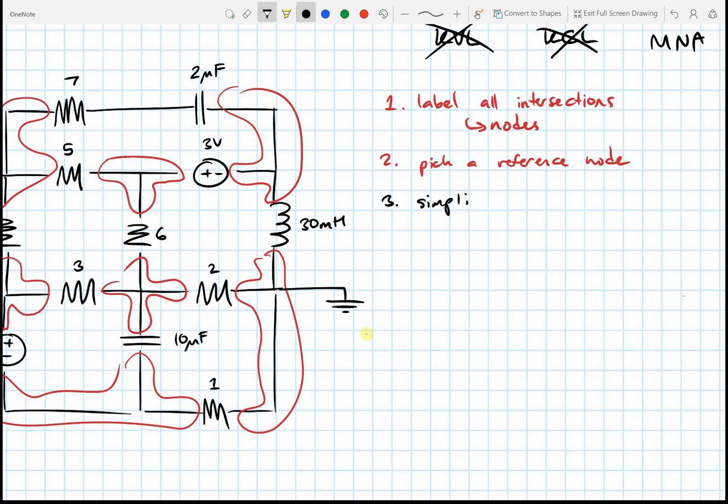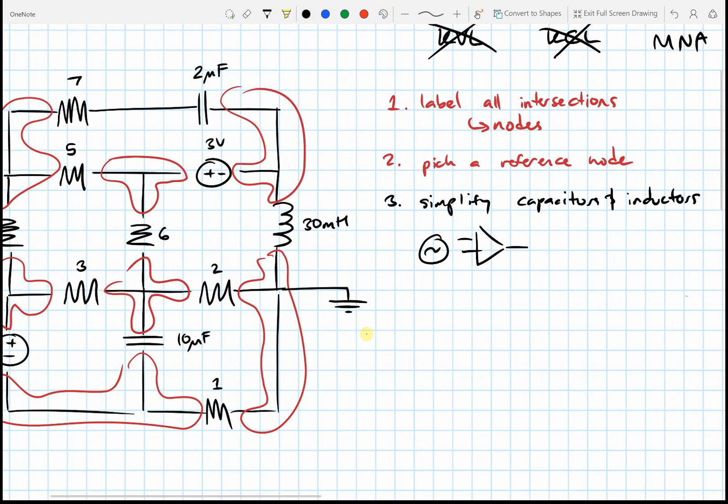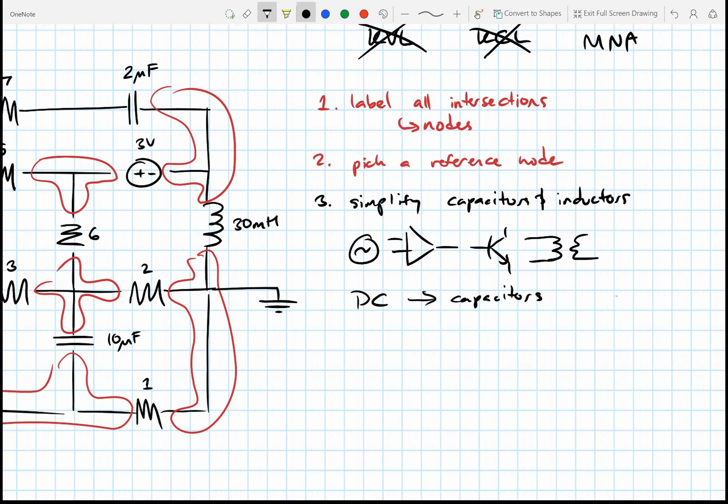Three: Simplify capacitors and inductors. Now MNA is very powerful. You can use it with AC signals, amplifiers, transistors, transformers, a whole bunch of stuff that you can't really use KVL or KCL with. But in this case we're using DC, which means capacitors just become open circuits, and inductors just become short circuits. Brakes and wires.